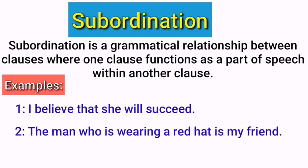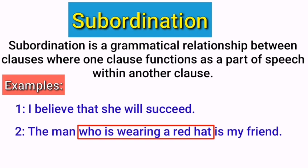Consider the example: 'The man who is wearing a red hat is my friend.' The group of words 'who is wearing a red hat' is a subordinate clause, and it functions as an adjective. Adjective is a part of speech, and this group of words functions as an adjective because it modifies the subject 'the man.' This group of words cannot stand alone as a sentence, so it plays the role of an adjective. This is also subordination.